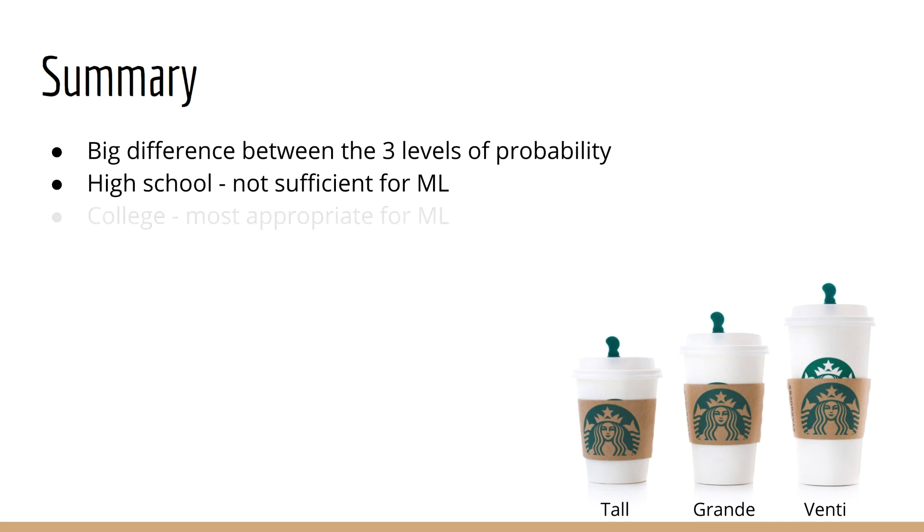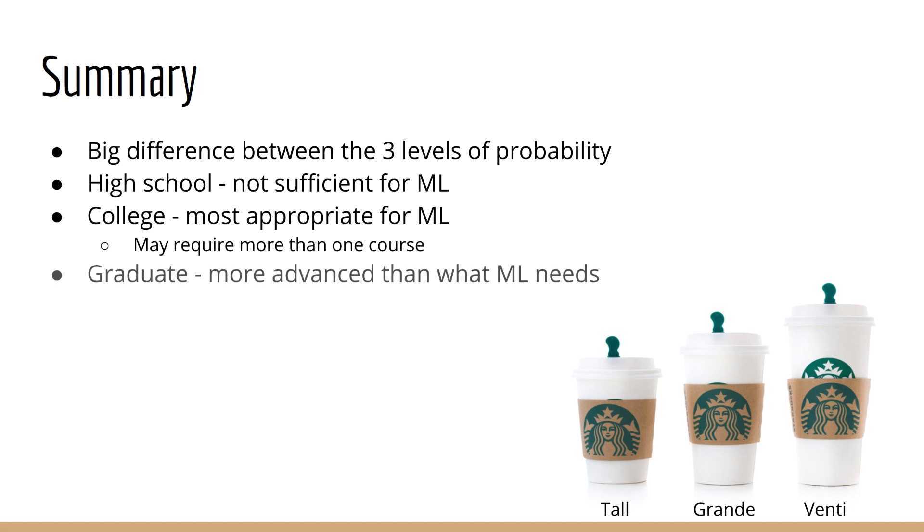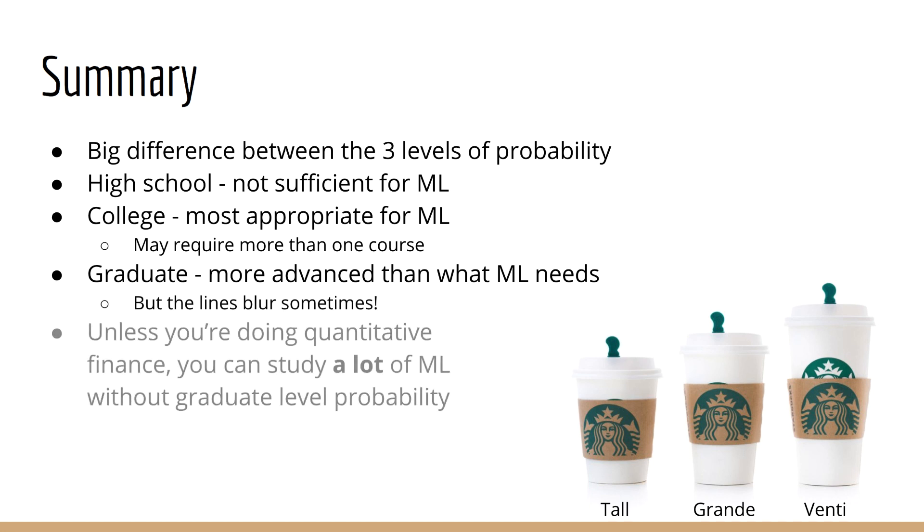College level probability and statistics will be the most appropriate for machine learning. This might encompass one or more courses at the undergraduate level, depending on the curriculum at your school. Graduate level probability is usually more advanced than what you would need for machine learning, although the lines do blur at certain times. Unless you plan on doing quantitative finance, then you can probably study a lot of machine learning without needing to invoke graduate level probability.